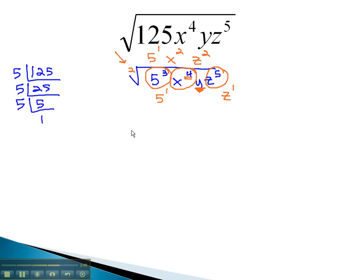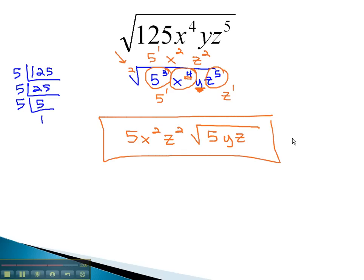We now have outside of the radical 5, x squared, z squared, and inside the square root of 5, y, and z for our final answer.